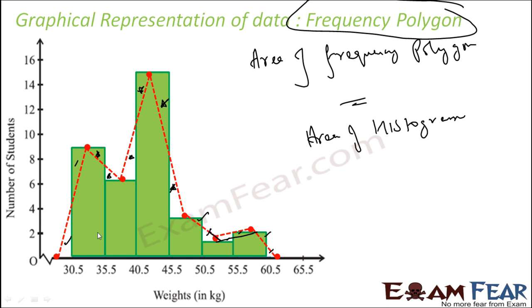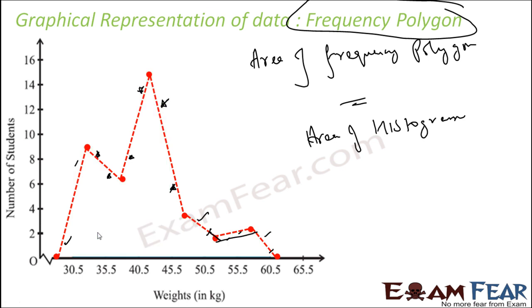So if you actually want to show the frequency polygon, you can remove the histogram as well — that is not required. This is the actual frequency polygon.